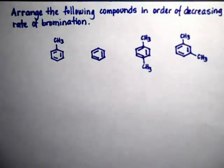In this problem, we're going to arrange the compounds in order of decreasing rate of bromination, from the one that reacts the fastest to the one that reacts at the slowest rate.